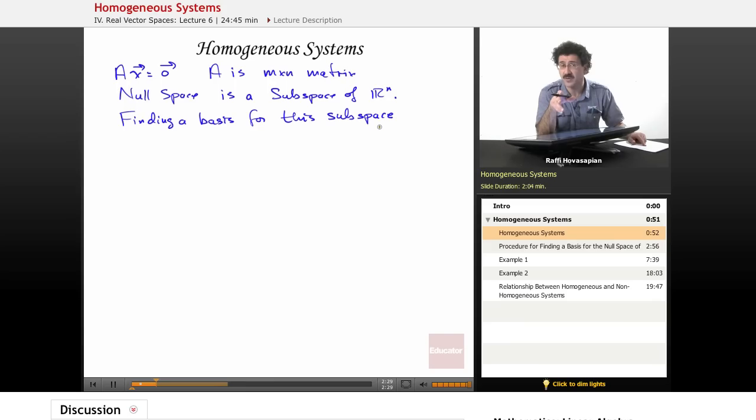and is also linearly independent. So you remember, you might have a series of vectors that span a space, but they might not be linearly independent. Or you might have some vectors that are linearly independent, but they might not span the space. A basis is something that satisfies both of those properties.